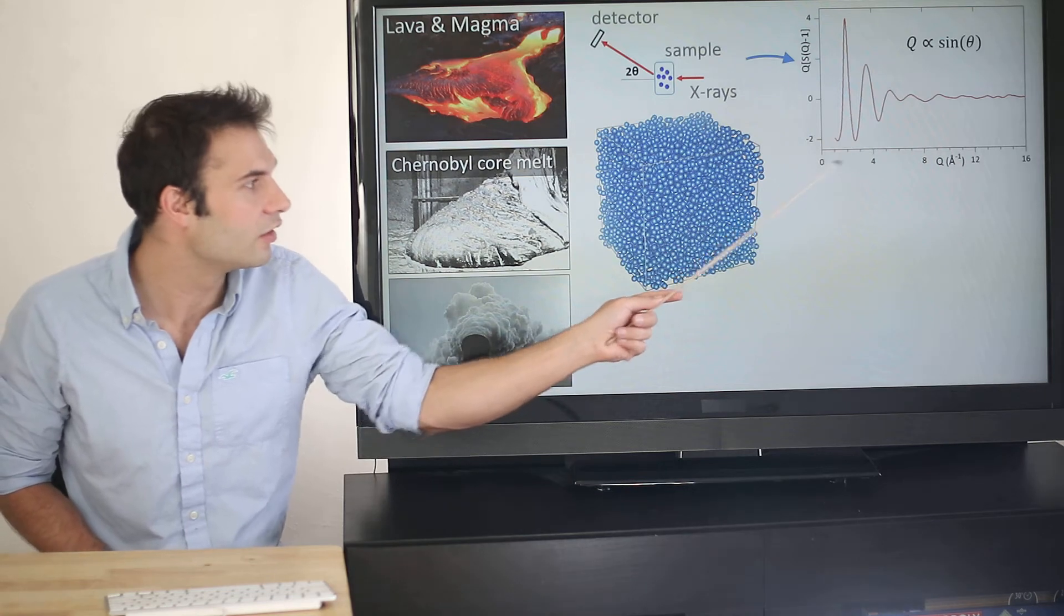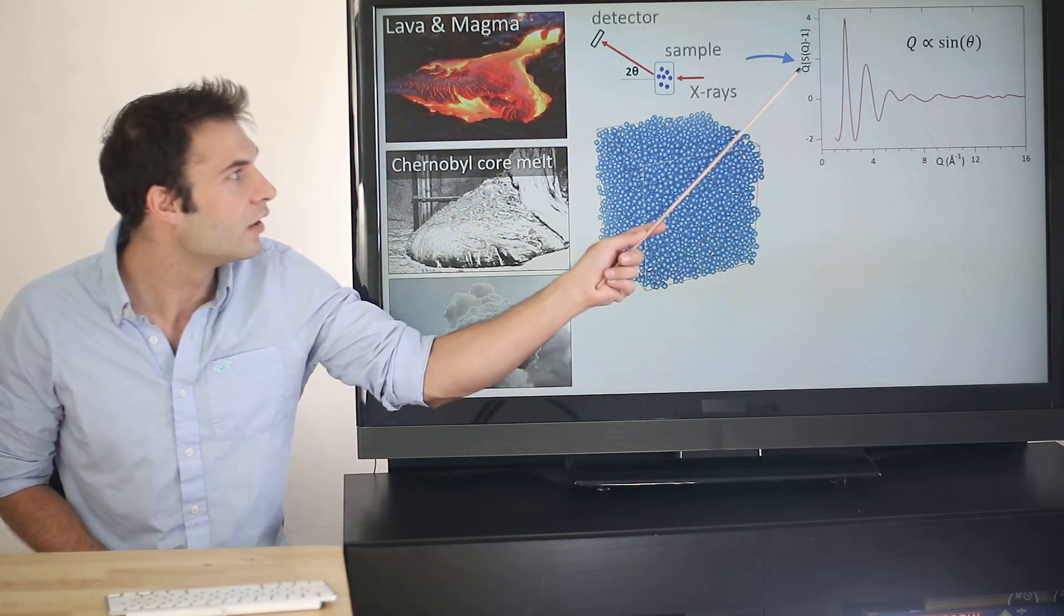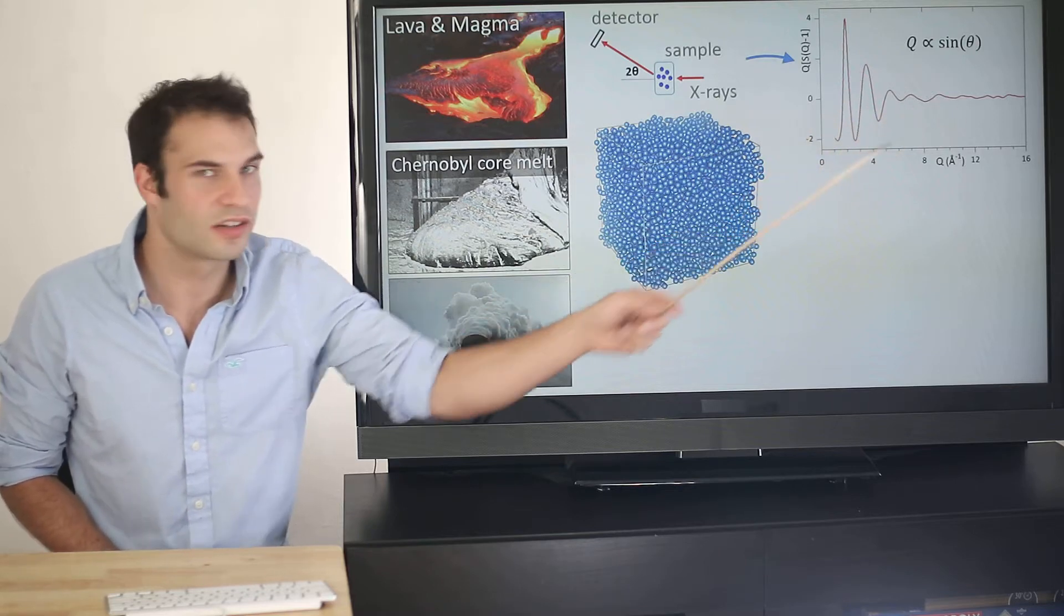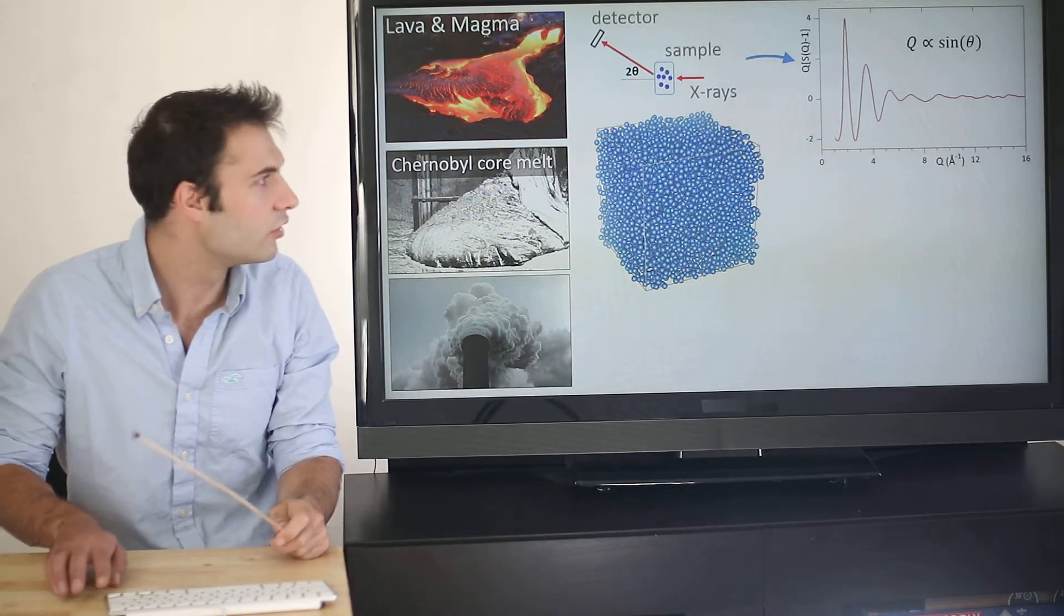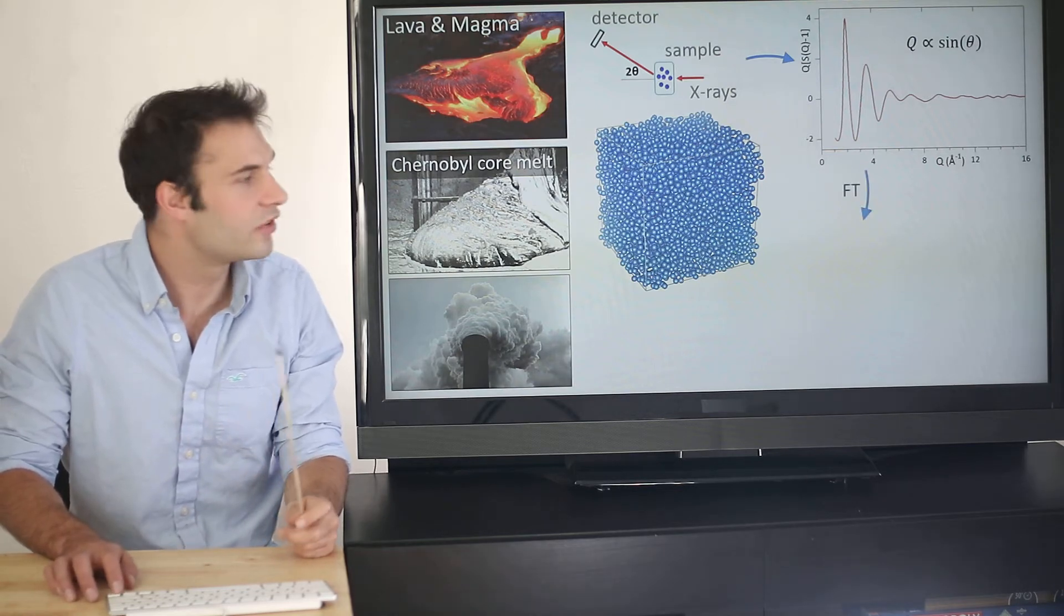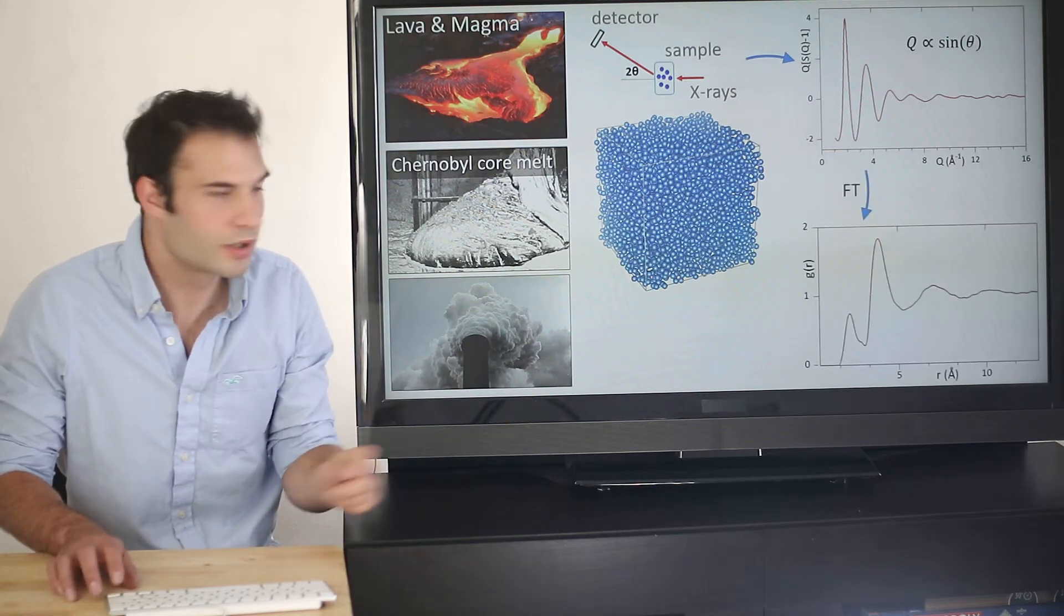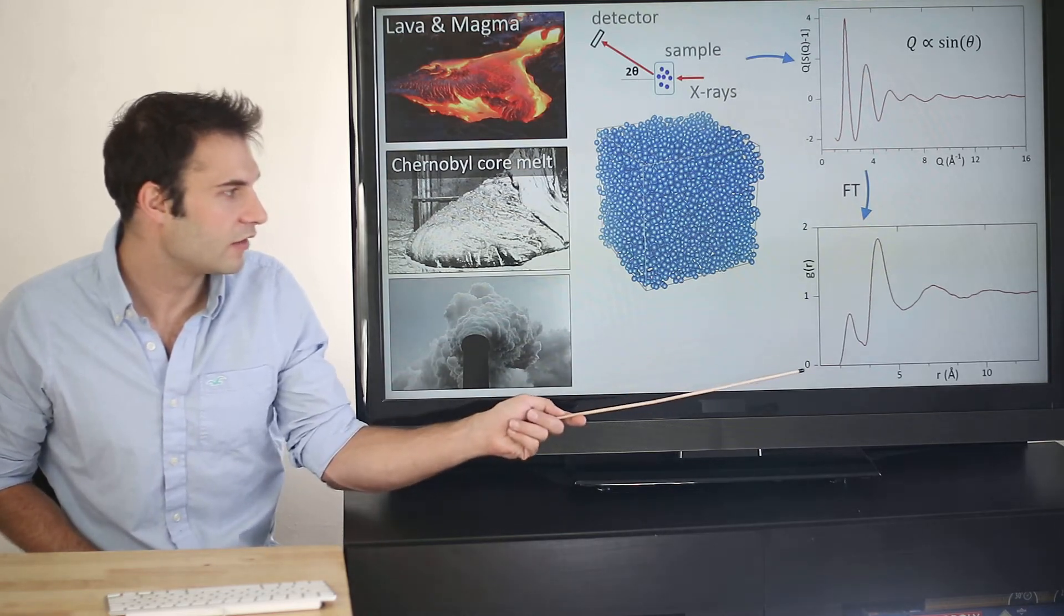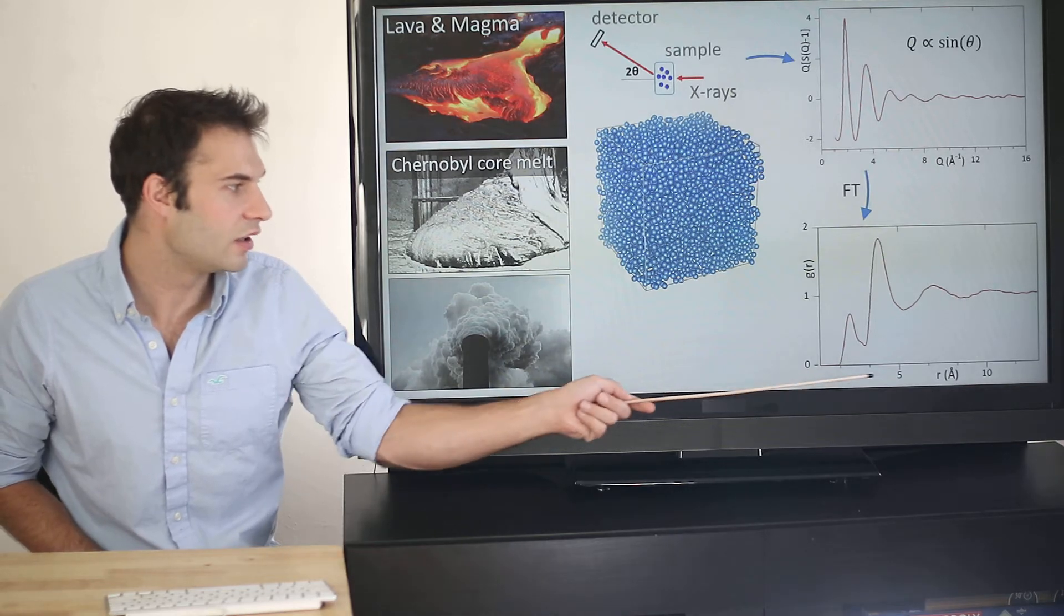The x-axis is q related to the scattering angle. The y-axis is q times s of q, and I've just multiplied by q to emphasize the high q structure. We Fourier transform the squiggly line, and we get another squiggly line. It's the pair distribution function, g of r against the atomic separation r in angstroms.